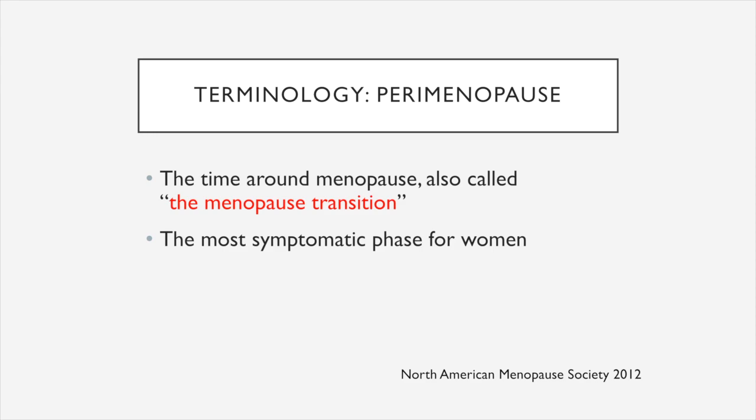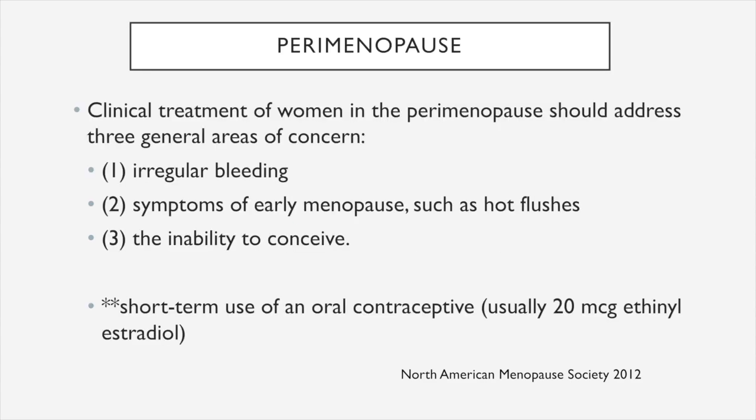Perimenopause is a term used to describe the time around menopause, also called the menopause transition. This is the most symptomatic phase for women. Clinical treatment during perimenopause should address three general areas: irregular bleeding, symptoms of early menopause such as hot flashes, and the inability to conceive. For perimenopausal women, we usually recommend short-term use of an oral contraceptive, usually 20 micrograms of ethinyl estradiol.